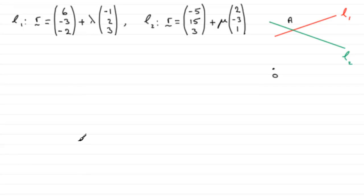Now, we're given two lines, L1 and L2, and their respective vector equations. And what we've got to show is that they intersect at a point, A, and find the position vector of this point where they intersect.